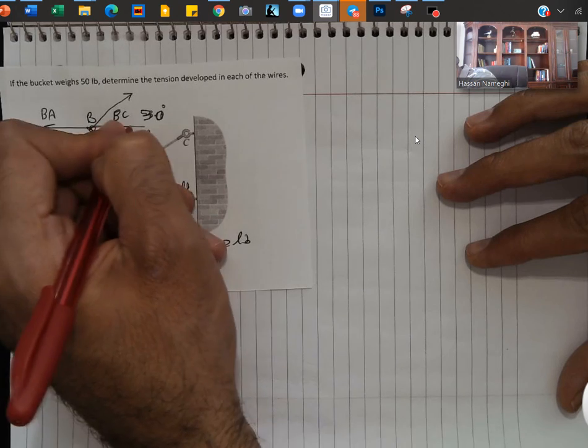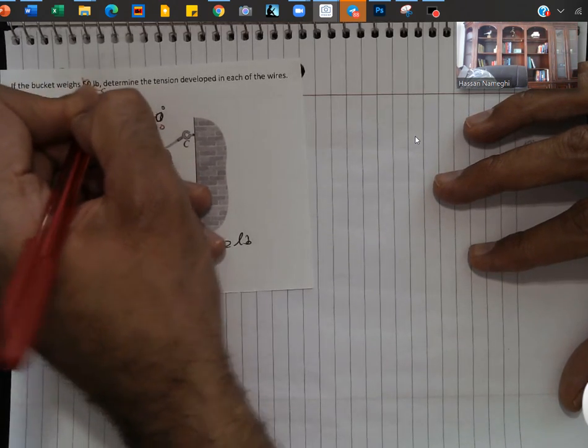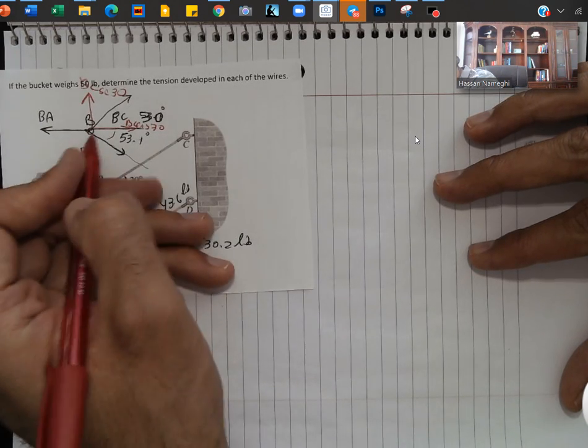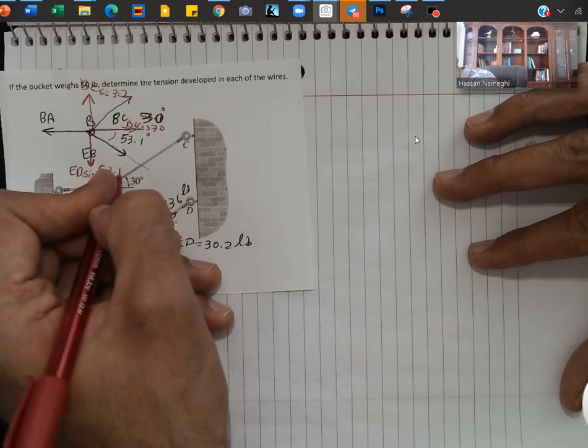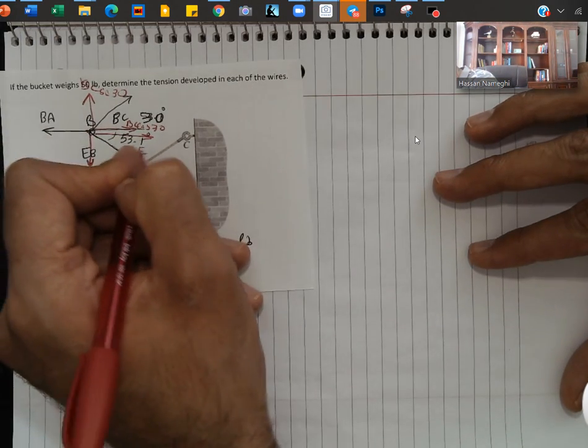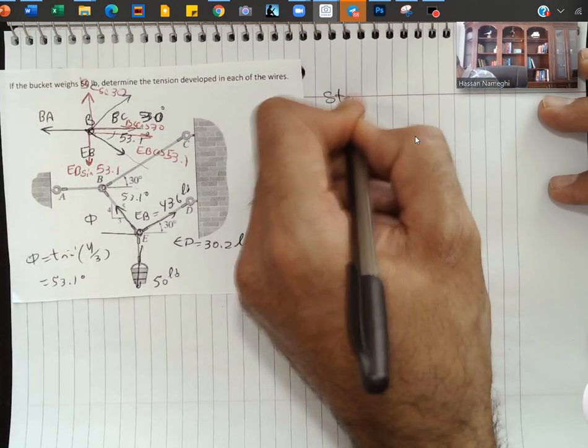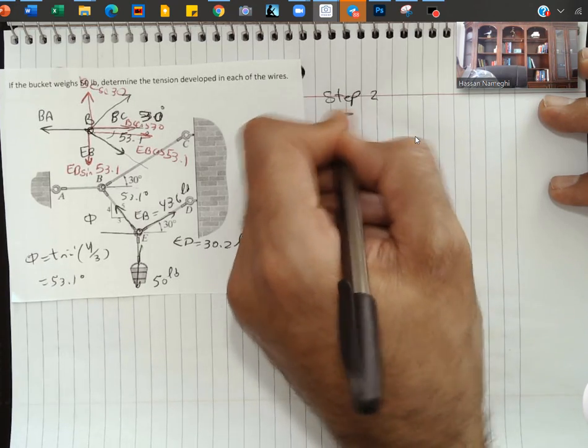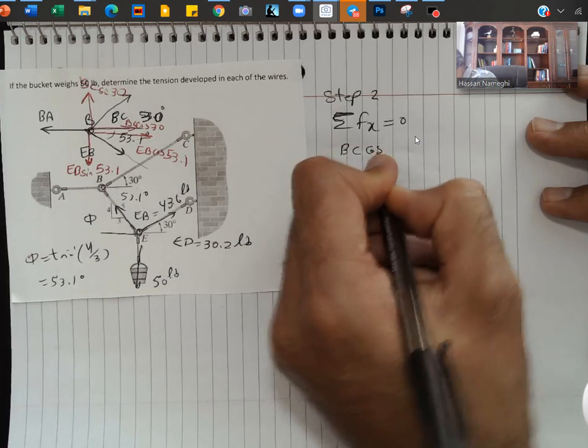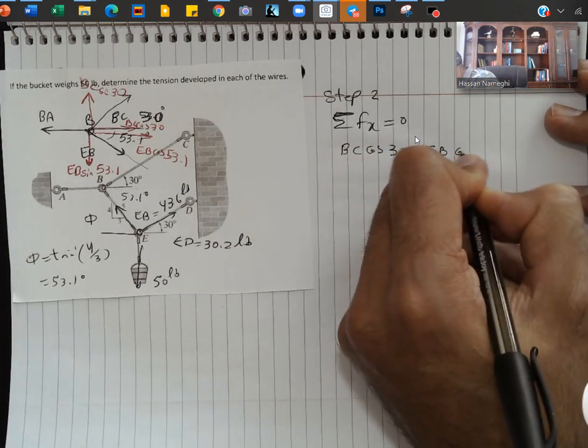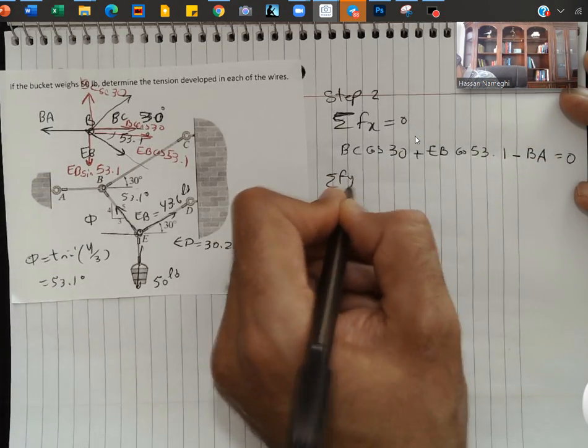In this diagram I can actually break it to X and Y components. On the BC we're going to get BC cosine 30 on the X. On the Y we have BC sine 30. For EB, EB on the Y will be sine because it's opposite, EB sine 53.1. On the X will be EB cosine 53.1. So this is step one, we did the free body diagram for it. In step two I'm going to set up the equations: sum of Fx equal to 0 and sum of Fy equal to 0. On the X I have BC cosine 30 plus EB cosine 53.1 minus BA equal to 0.